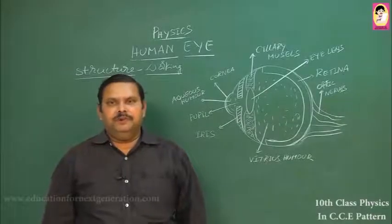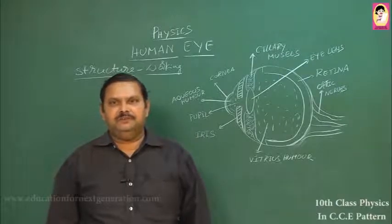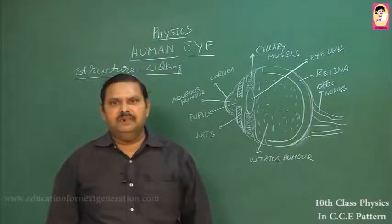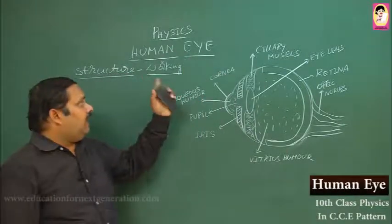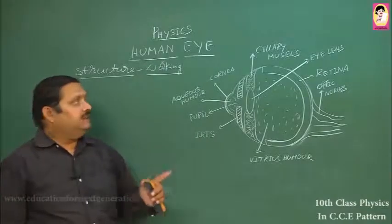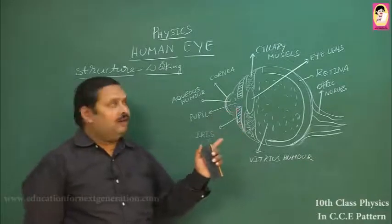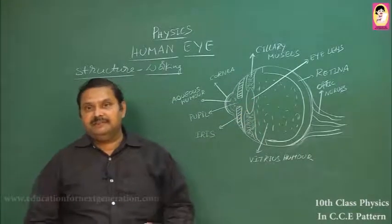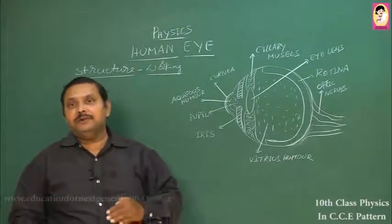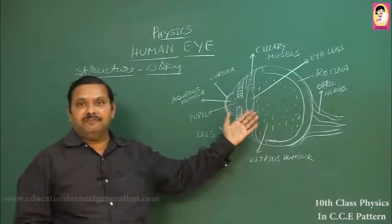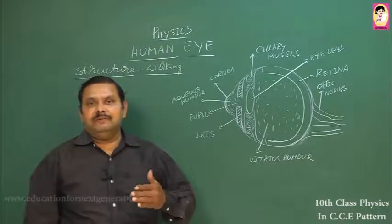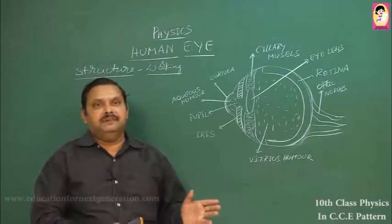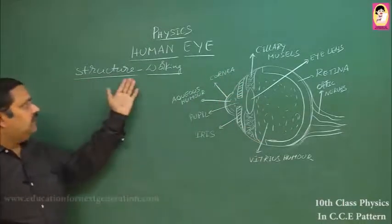Hi everybody. Welcome to Education for Next Generation. This is D. Mallika Jinrao, Physics teacher. Today we are going to discuss about the most important organ in our body, that is the human eye. It is essential for us to know the details of the human eye, how it functions, and particularly what is the use of different parts. In this session, we will discuss the structure of the human eye, the functioning of different parts, and the three types of refractive defects and how they can be rectified. Let us come to the human eye, its structure and its working.